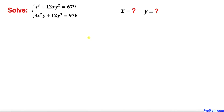Welcome to pre-math. In this video we are going to solve this given system of two equations: x³ + 12xy² = 679 and the second equation is 9x²y + 12y³ = 978. In other words, we are going to find the value of x and y variables.